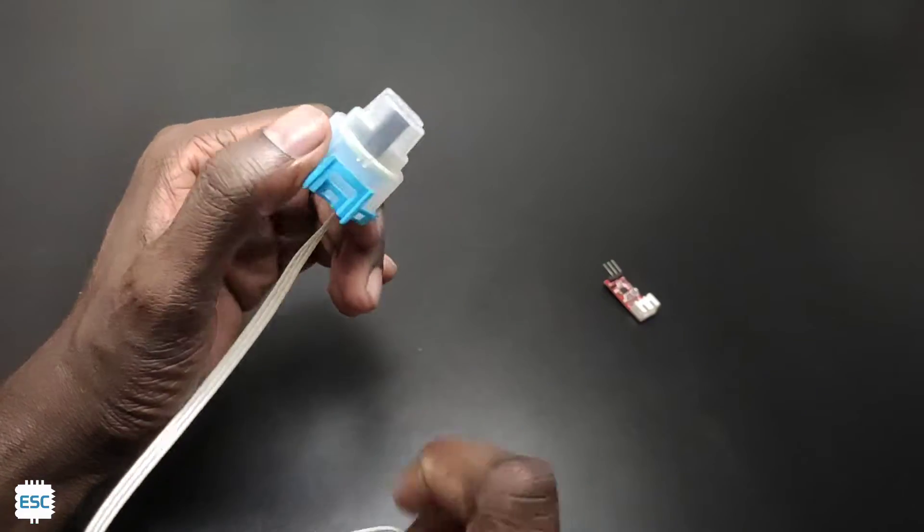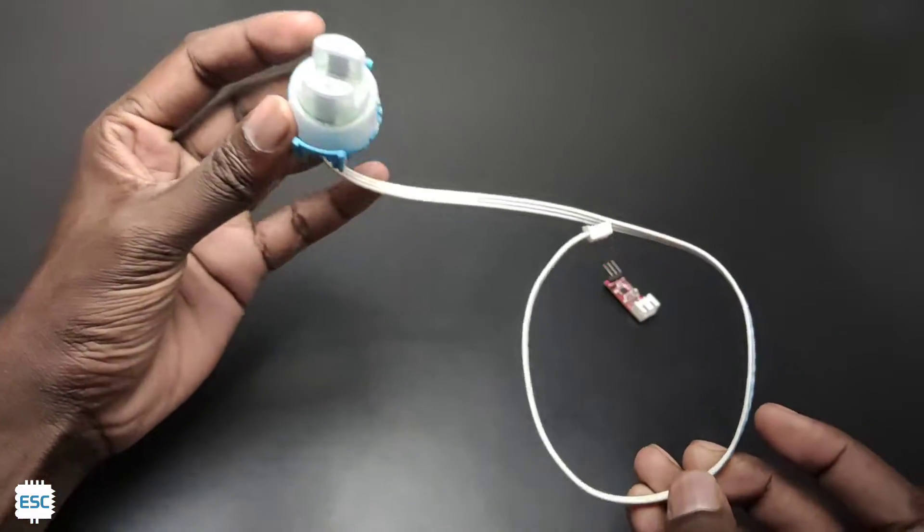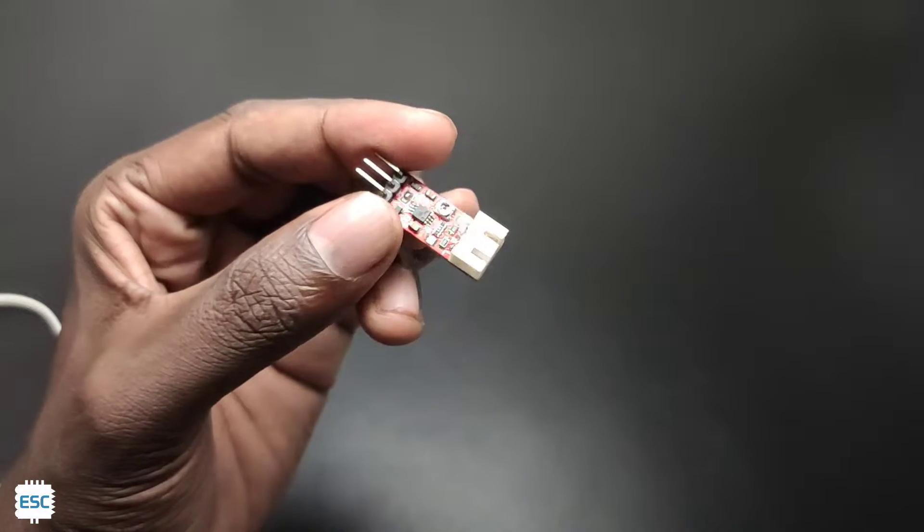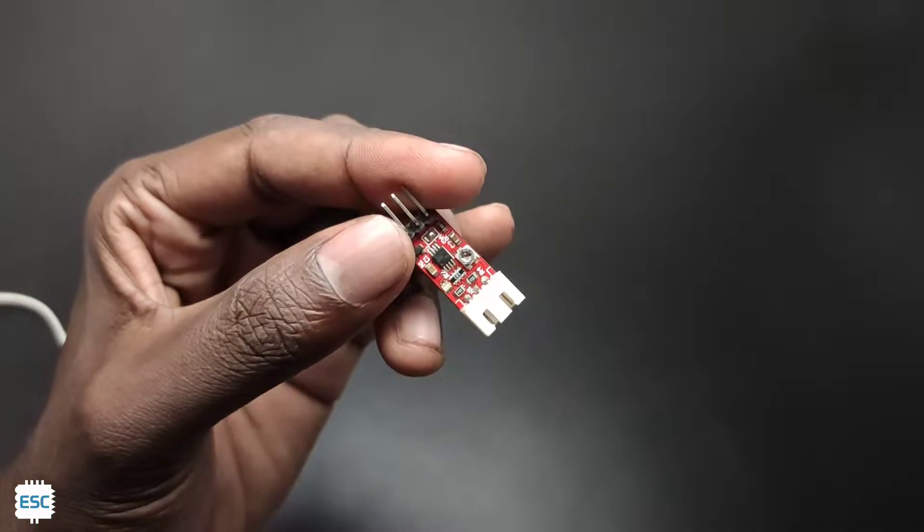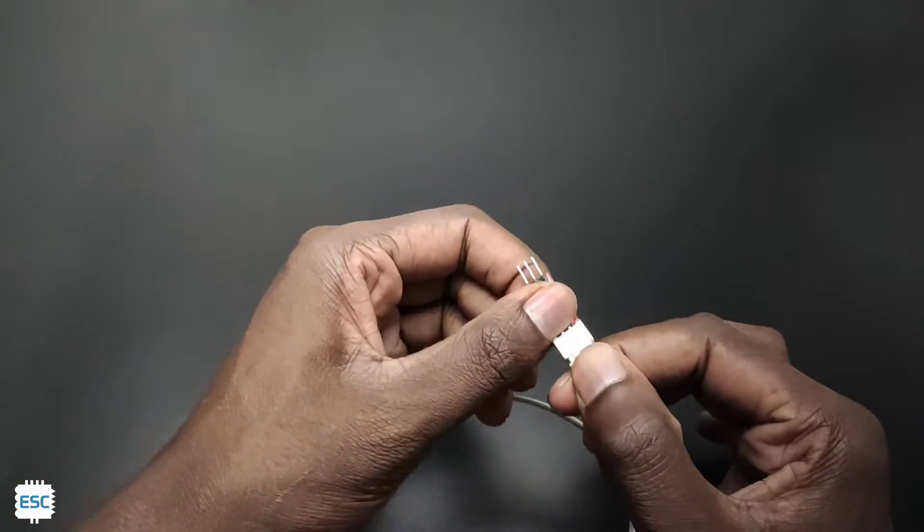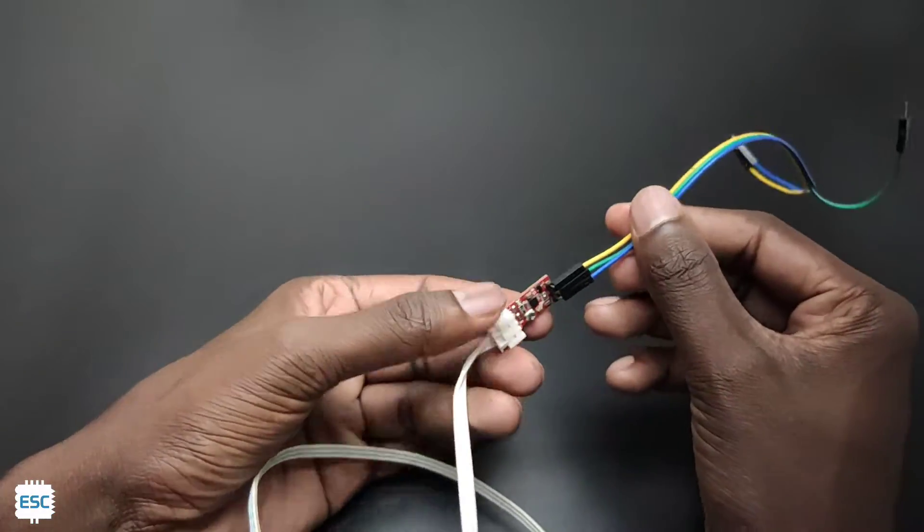So here is the turbidity module and the amplifier. The amplifier has 3 pins, VCC, ground and the output. Working and other details of this module, I explained in a previous video. You can find that video from the I button.